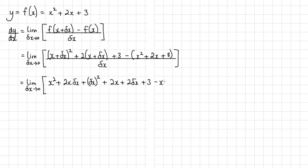So I'll have minus x squared minus the 2x minus 3. And again, that is all over delta x.